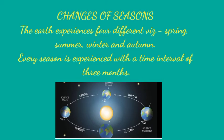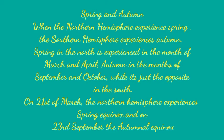Spring and autumn share very similar characteristics. Spring in the northern hemisphere is autumn for the southern hemisphere. Spring is experienced in the northern hemisphere on 21st of March, while on that same date it is autumn for the southern hemisphere. Similarly, when it is autumn in the northern hemisphere, it is spring in the southern hemisphere. The specific dates to discuss for these two seasons are 21st of March and 23rd of September.